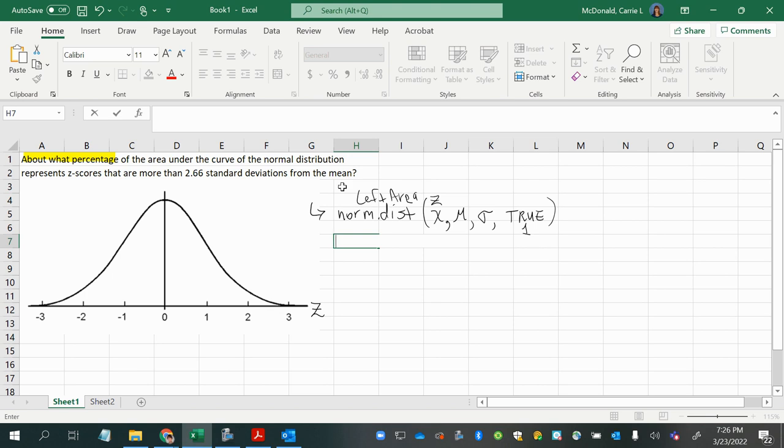Alrighty, let's break this down a little bit. First of all, it says we're looking for a percentage. And whenever we're looking for a percentage, whether it be a probability or an area or a percentage, the way it's worded, all three of those things—probability, percentage, area—means we're looking for an area.